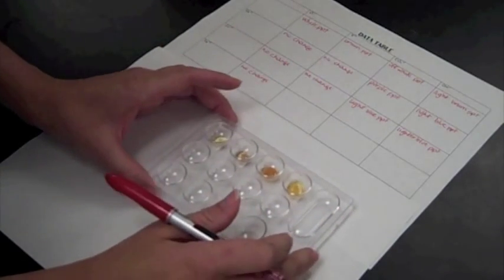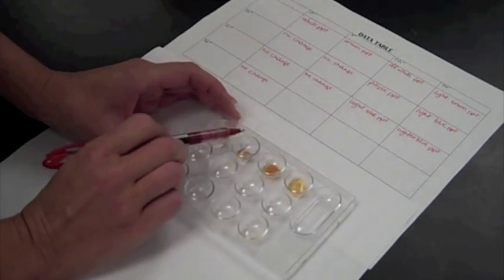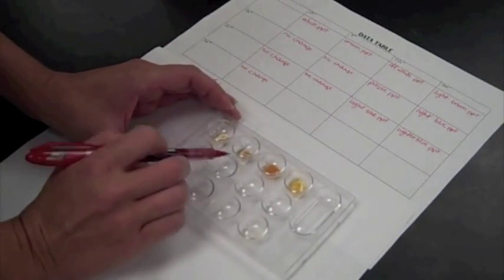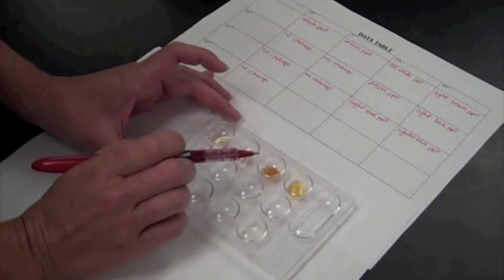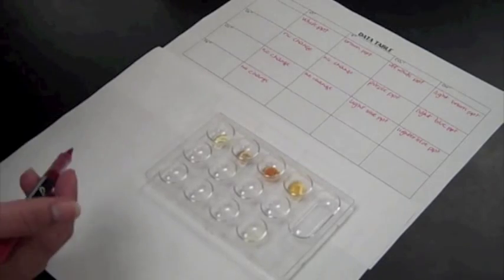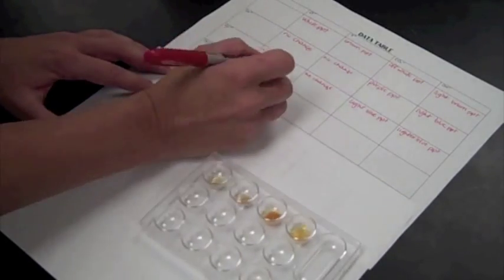We had what looks to be a very faint brown precipitate here with the iron and the sulfur. I'm going to call this a slight reaction because it's not real obvious, but it definitely did change from what we started with. So I'm going to say slight brown.